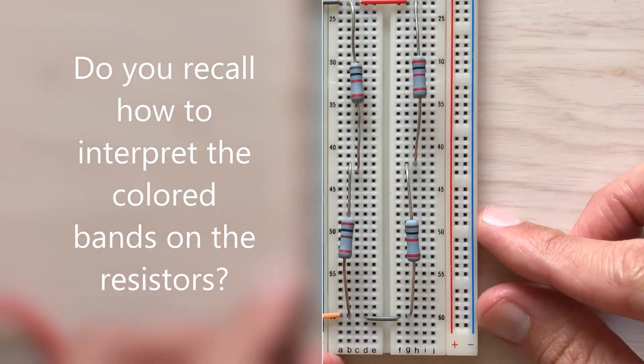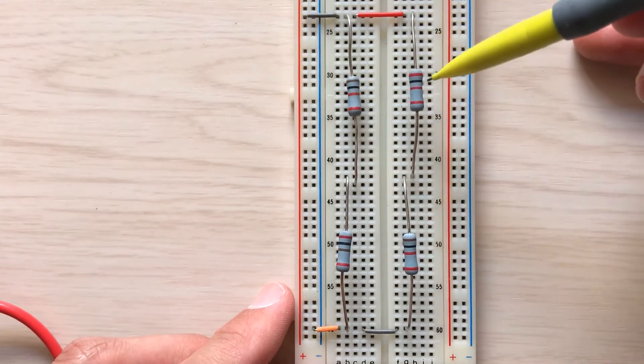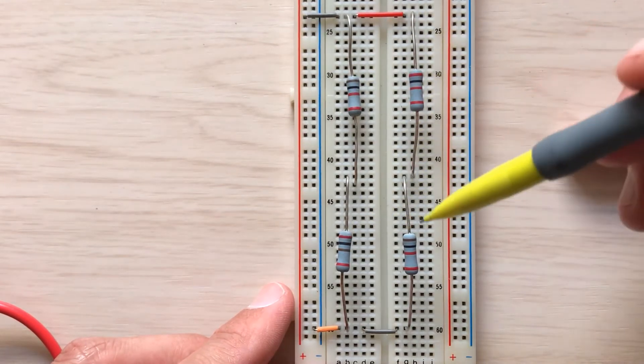So I have four resistors here, as you can see: resistor one, resistor two, resistor three, resistor four.